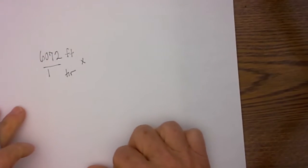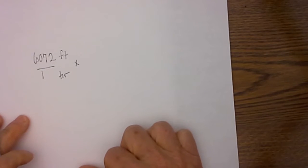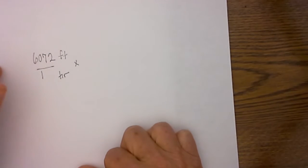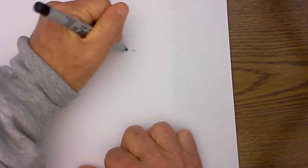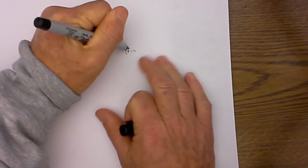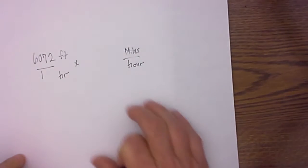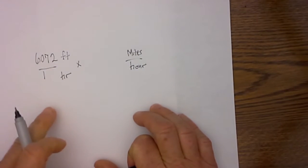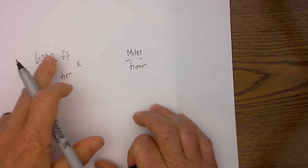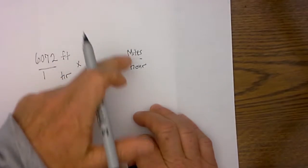So the way I solve these is I first write down my goal units, and my goal units is miles per hour. So what I have to do next is figure out, okay, how do I get feet per hour into miles per hour?